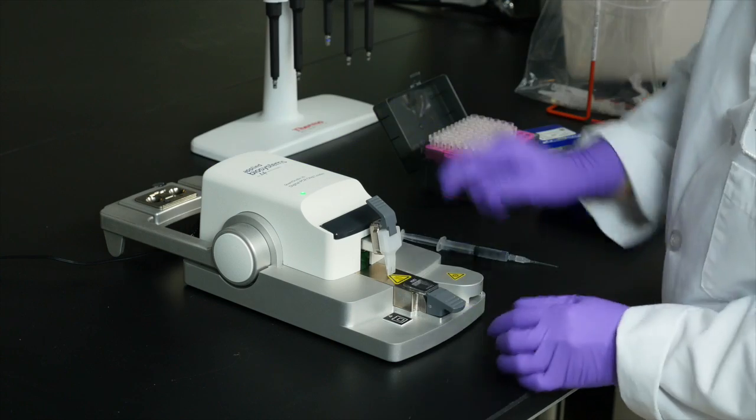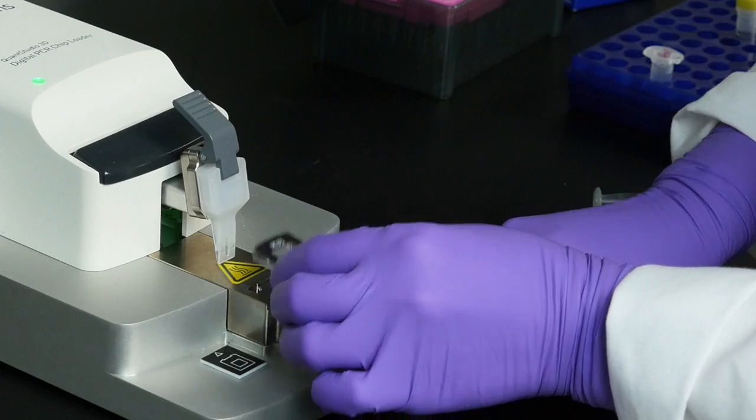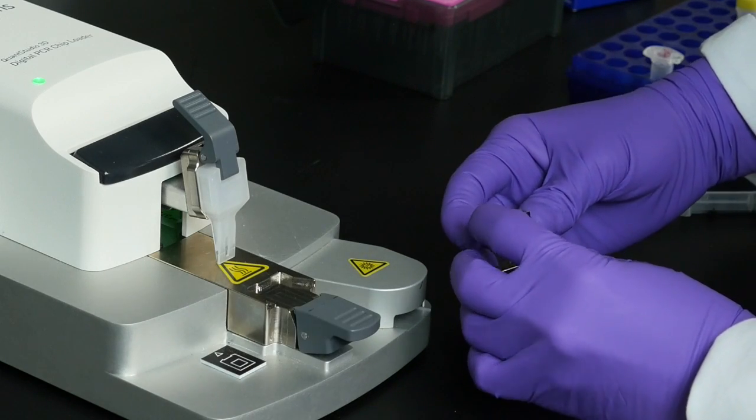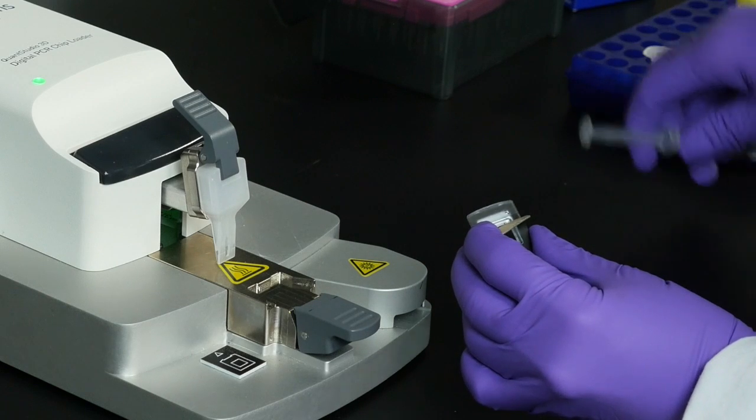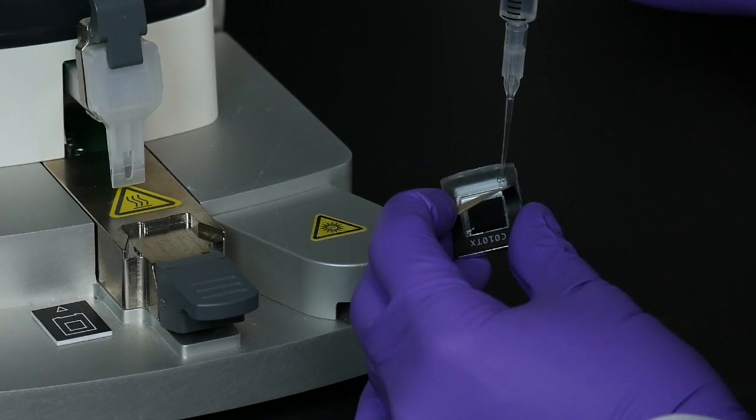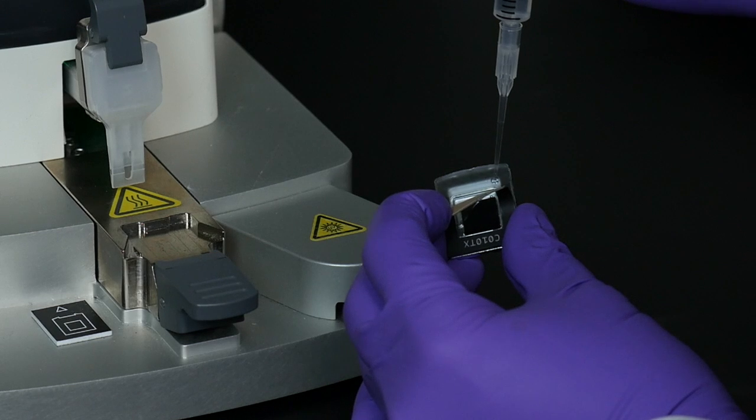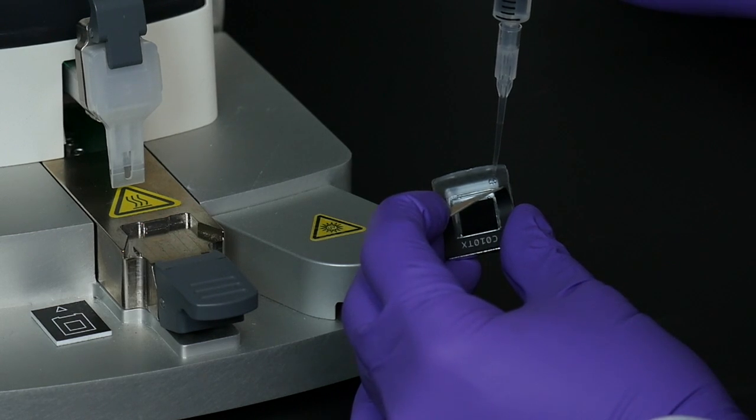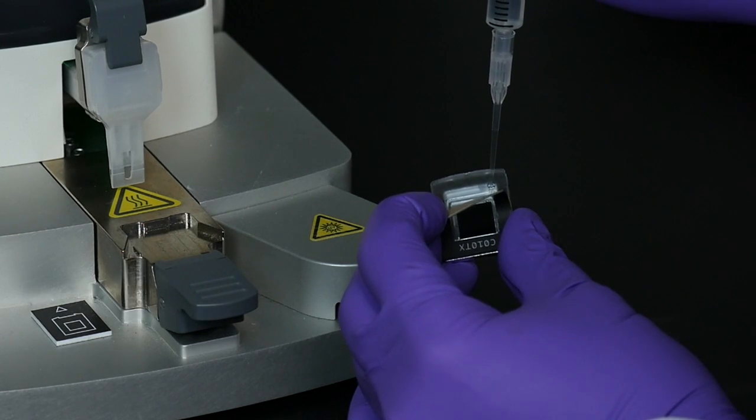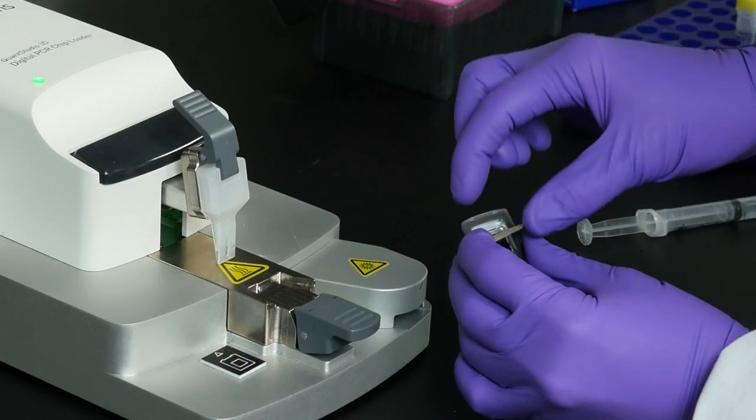The chip is sealed with an adhesive label on the version 2 chip lid. To fill the chip chamber with immersion fluid, hold back the top of the chip label in order to access the loading port. When the chamber is full, remove the backing from the label.